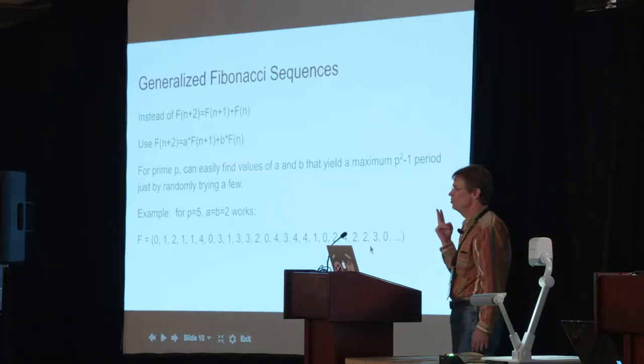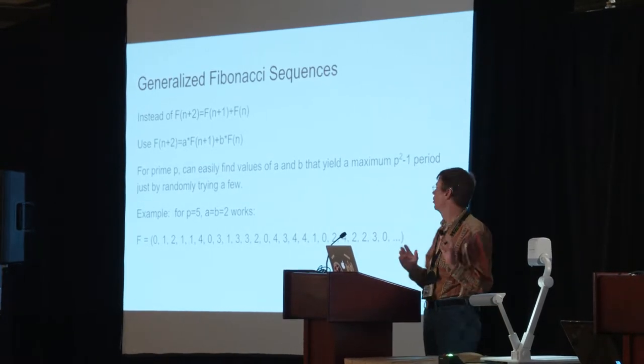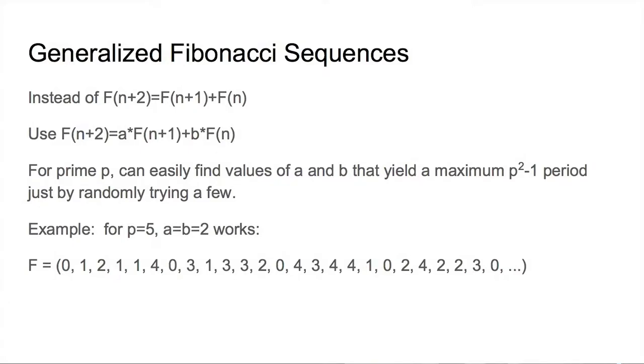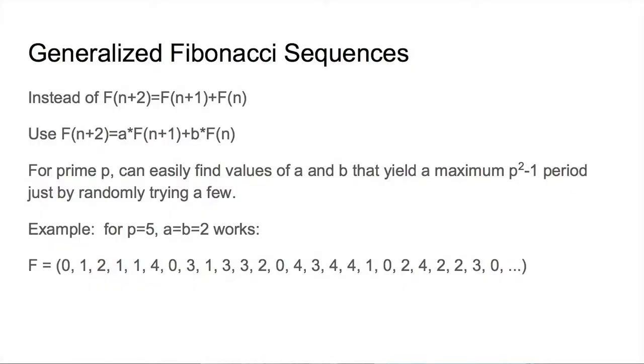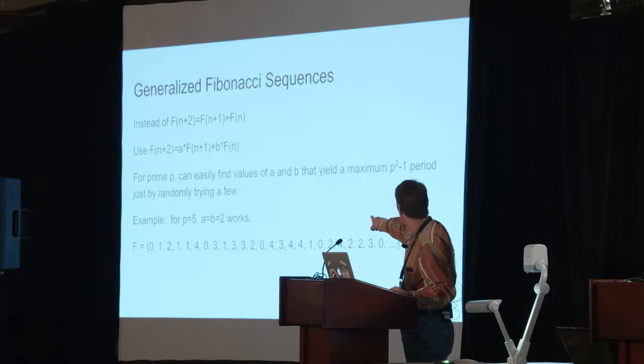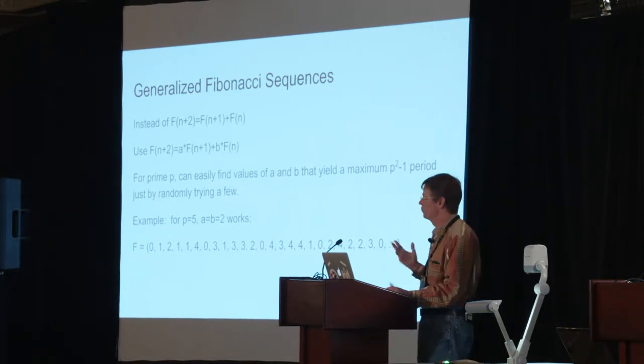So what can we do? Let's change the Fibonacci sequence a little bit. Instead of adding two consecutive numbers, I'm going to add a weighted sum of the previous two values: a times the previous value plus b times the current value gives the next value. This only works for prime p — I can only get a maximum period of p² minus 1 for prime p. But I can easily find values of a and b that give that maximum period just by randomly trying a few. For p equal to 5, setting a and b equal to 2, the sequence repeats after 24 iterations.